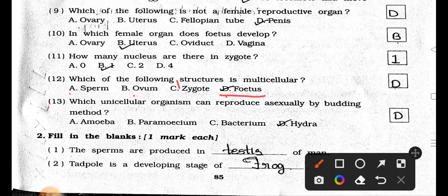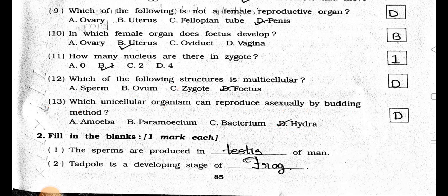Number 13. Which unicellular organism can reproduce asexually by budding method? A. Amoeba, B. Paramecium, C. Bacterium, and D. Hydra. Answer is Option D, Hydra.